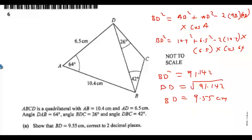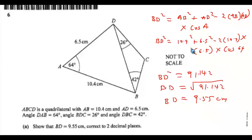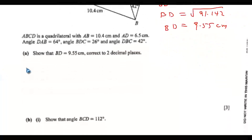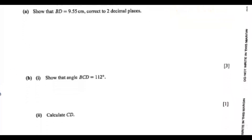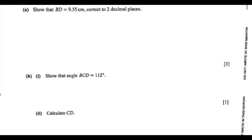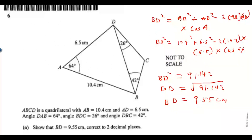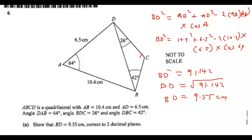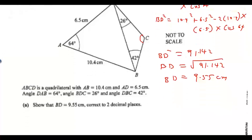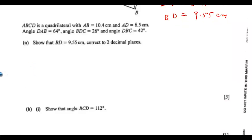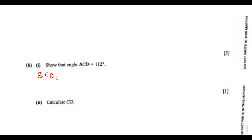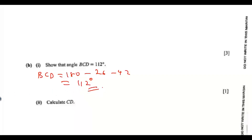In the exam, you are expected to write out the working clearly. Part B: show that angle BCD equals 112 degrees. Angle BCD equals 180 minus 42 minus 26, which gives 112 degrees.